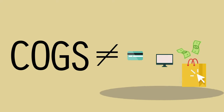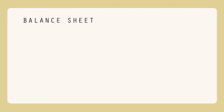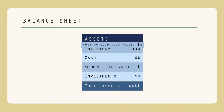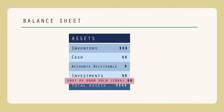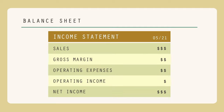COGS does not include indirect costs, such as sales, marketing, or distribution expenses. From an accounting perspective, COGS is not an asset, nor is it a liability. It is recorded as an expense on an income statement.